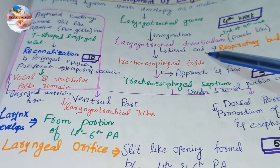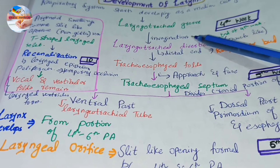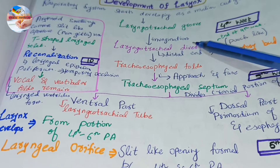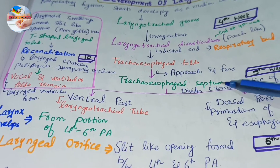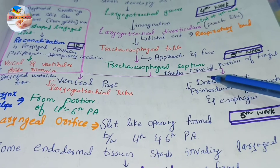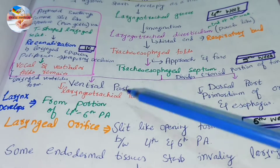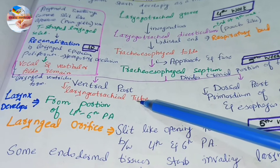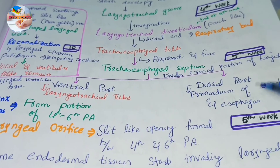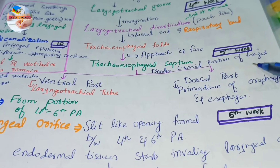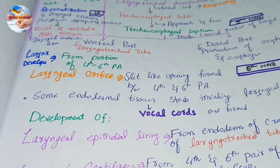The laryngotracheal diverticulum maintains a connection to the primordial pharynx through a primordial laryngeal inlet. At the fifth week, tracheoesophageal folds develop within this diverticulum, and by the end of the fifth week they approach and fuse to form a tracheoesophageal septum. This septum divides the cranial portion of the foregut into a ventral part — the laryngotracheal tube, primordium for the larynx, trachea, bronchi, and lungs — and a dorsal part, primordium for the oropharynx and esophagus.